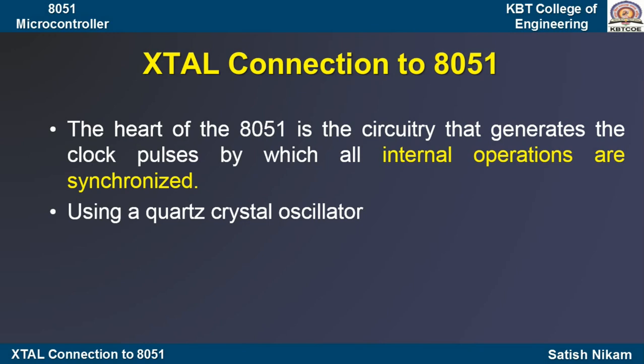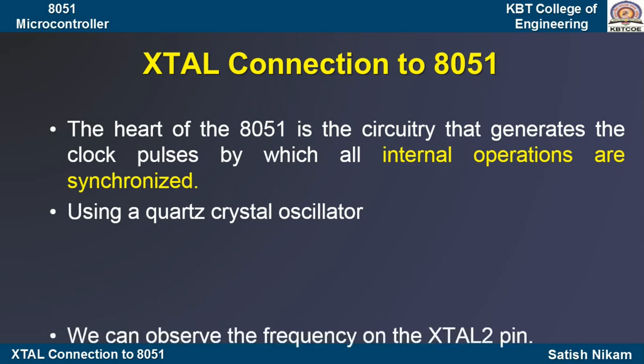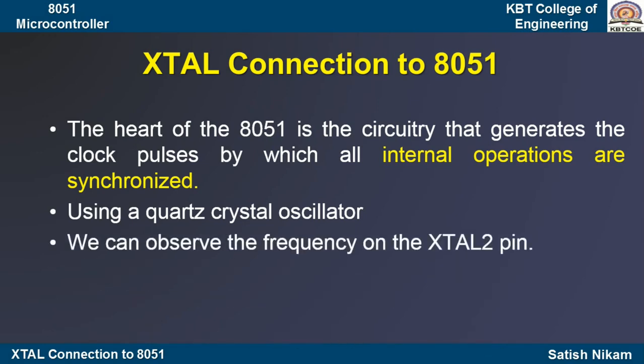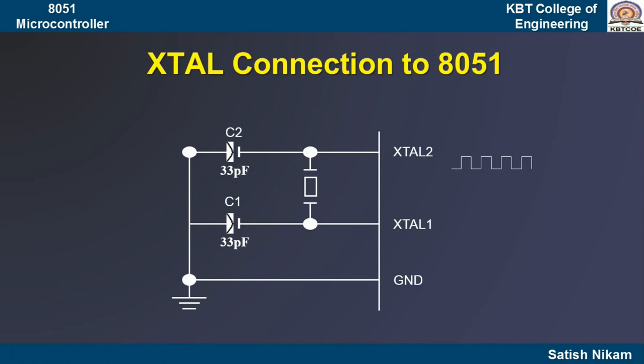11.0592 megahertz is the frequency required for our 8051 microcontroller. Why this specific frequency will be discussed in the serial communication section. This is the frequency generated by the crystal oscillator, and that crystal oscillator we can connect to pin number 18 and 19.